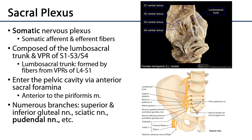The sacral plexus is a somatic nervous plexus, much like the cervical, brachial, lumbar, and coccygeal plexuses. Somatic nervous plexuses have afferent and efferent components. The afferent are somatic sensory and the efferent are somatic motor, so they're going to control skeletal muscle.